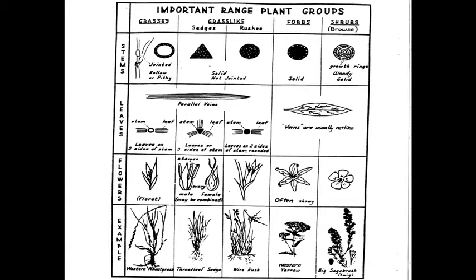Grasses have joints or nodes. The stems are hollow. The leaves are parallel — in other words, the venation pattern of the veins in the leaves are parallel. The leaves come off at opposite sides of the stem, and they have very inconspicuous flowers.